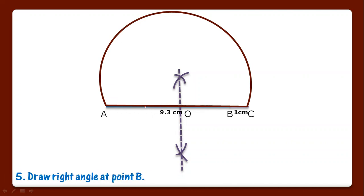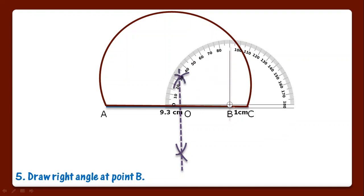Then draw a right angle at point B. You can draw a right angle through compass or through protractor. In this way we can make an angle of 90 degrees.